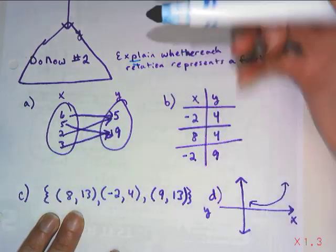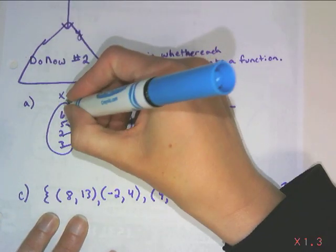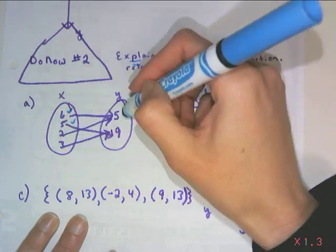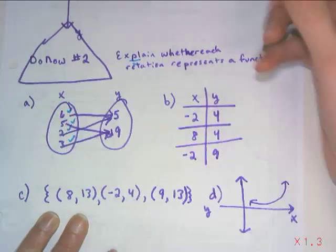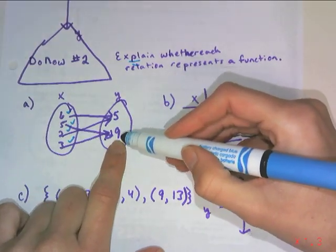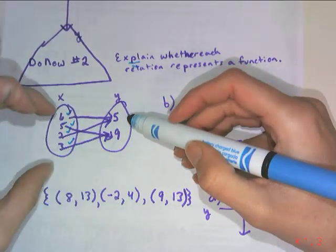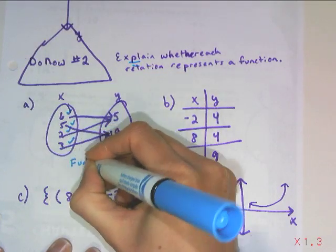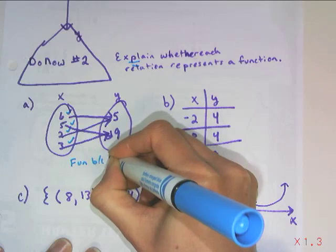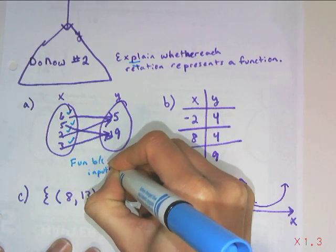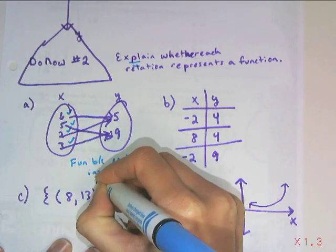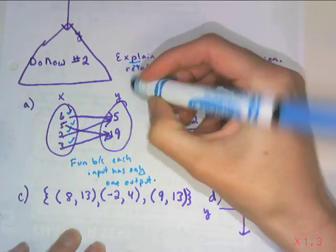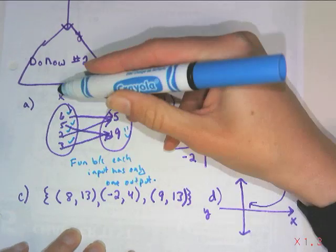So with this first one, we see that 6 is going just to 5, so he's okay. 5 is going just to 9, so he's okay. 2 goes to 5, he's alright. 3 goes to 9, that's fine. So we see here that 9 is a popular one, but the definition of the function is that each x has exactly one y. So each input has only one output. So we have a popular y, which is fine, we just can't have a greedy x.